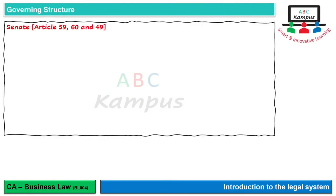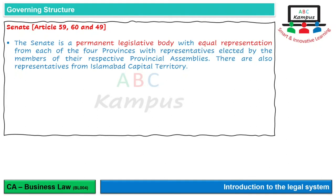Senate کے بارے میں جو Articles یہاں discuss کریں گے وہ ہیں 59, 60 اور 49. Senate ایک permanent legislative body ہے with equal representation from each of the four provinces, with representatives elected by the members of the respective provincial assemblies. یعنی Senate کے اندر تمام صوبوں کی equal seats ہوتی ہیں - جتنی seats Punjab کی ہوں گی اتنی ہی Balochistan، KPK اور Sindh کی ہوں گی. National Assembly سے فرق یہ آتا ہے کہ وہاں جس صوبے کی زیادہ آبادی ہوتی ہے اس کے زیادہ لوگ represent ہو رہے ہوتے ہیں، لیکن Senate کے اندر ہر province سے equal لوگ represent ہو رہے ہوتے ہیں۔